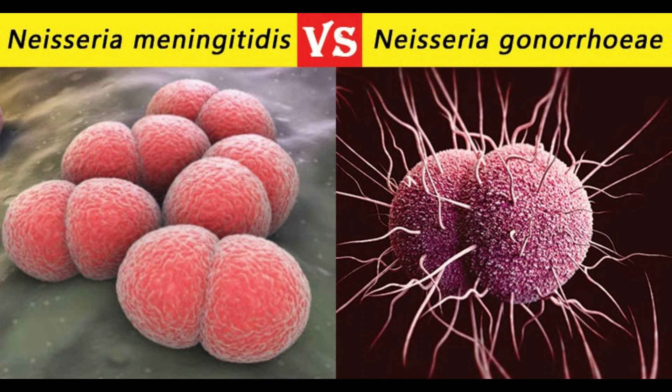23. Pathogen: N. gonorrhoeae is always a pathogen; N. meningitidis may or may not be pathogenic. 24. Portal of entry: N. gonorrhoeae — genital; N. meningitidis — respiratory. 25. Site of infection: N. gonorrhoeae primarily causes infection of the anogenital tract; N. meningitidis colonizes the upper respiratory tract as a commensal and occasionally invades to cause systemic disease. 26. Virulence factors: N. gonorrhoeae — pili, IgA proteases, and production of lipopolysaccharide endotoxin (LPS); N. meningitidis — capsule, IgA protease, and iron utilization from transferrin.